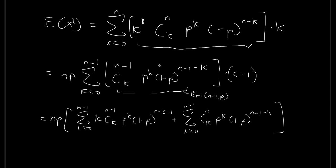So this is just the probability of that. So what this means is that for this expression over here, this is the probability and this is k. So this is just the expected value of the binomial distribution when there are n minus 1 trials. And we know that the expected value is just equal to n minus 1 times p.